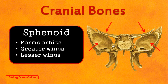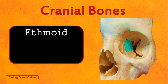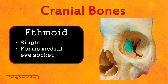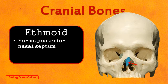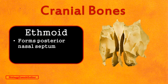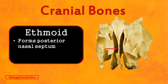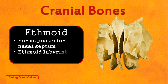Looking just inside the orbits of the eyes, we will see the orbital plate of the ethmoid bone — our final cranial bone. The ethmoid bone is a single bone that forms the medial aspect of the eye socket. Zooming out, we can see the perpendicular plate of the ethmoid bone, which forms the posterior aspect of the nasal septum. Extracting the ethmoid bone, we can clearly see the perpendicular plate, the orbital plates, and the ethmoid labyrinth — which contains a series of air pockets and chambers that make up the ethmoid sinuses.